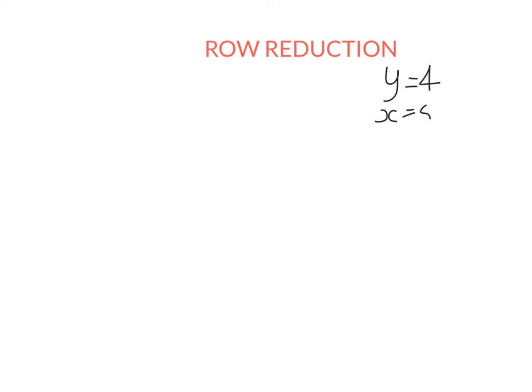Let's say I have the equations y equals 4 and x equals 5. Obviously the solution to this simultaneous equation is really, really simple — it's just going to be the point (5, 4). If I graph this line and this line, they intersect at this point. I just want to show you that I can do certain things to these equations and not change the solution.